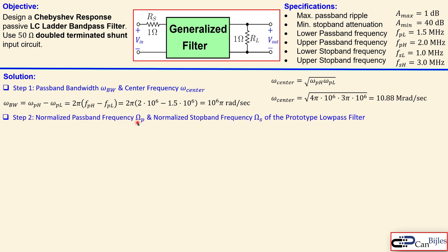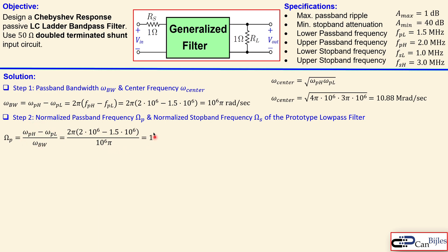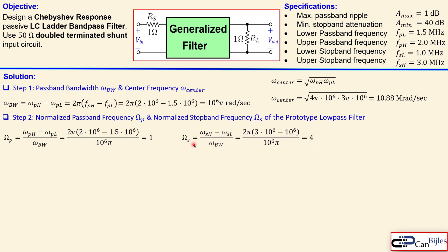Step 2 is the normalized passband frequency Ω_P and also the normalized stopband frequency Ω_S of the prototype low-pass filter, since we continue with the low-pass filter design and then transform the low-pass circuit into a bandpass filter circuit. Ω_P is the difference between the upper and lower passband frequencies divided by the bandwidth — that is always 1. Ω_S is the difference between the upper and lower stopband frequencies divided by the bandwidth, which gives 4 in this case.